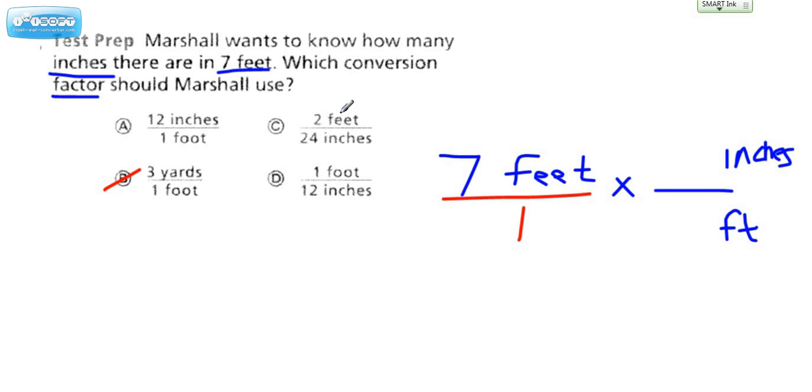This is not inches to feet. It's the other way around. So let's cross that one out. And this is not inches to feet, but what's interesting about this one is it has the same numbers in it. So let's talk about how do you choose between choice A and choice D.